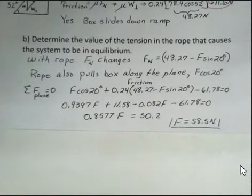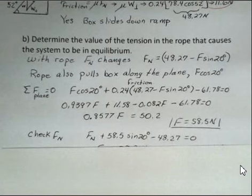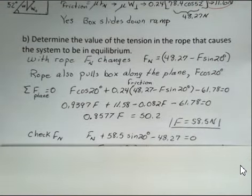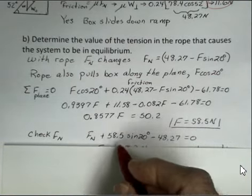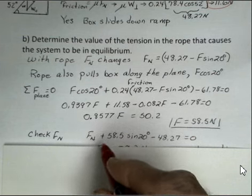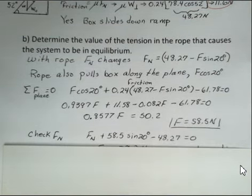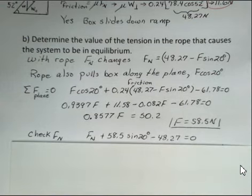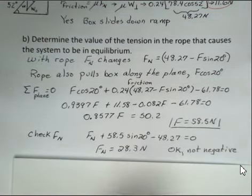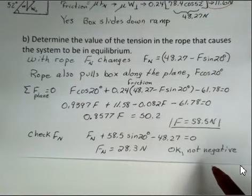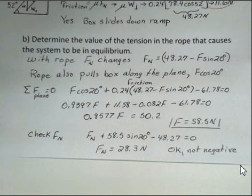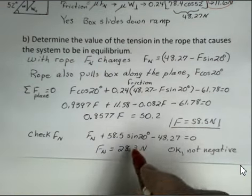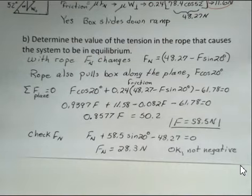And we might check to see if this is reasonable. One thing we could check would be the normal force. How much normal force do we have now? Well, we have normal force plus this component of the tension in the rope. That's outward from the ramp. We've got 48.27 for the perpendicular component of the weight that pulls the box into the ramp. And we come up now with a contact force between the box and the ramp of 28.3 newtons. That's okay. It's not a negative number. If it was negative, that means gravity is winning, pulling the box into the ramp. So it's not. We have a normal force. There is contact between the box and the ramp.